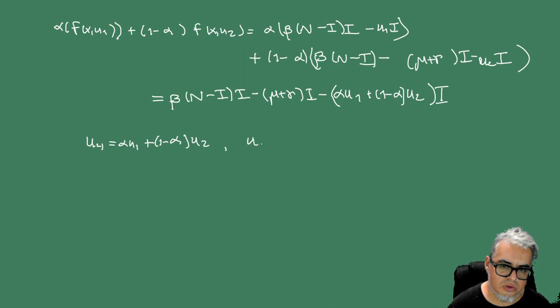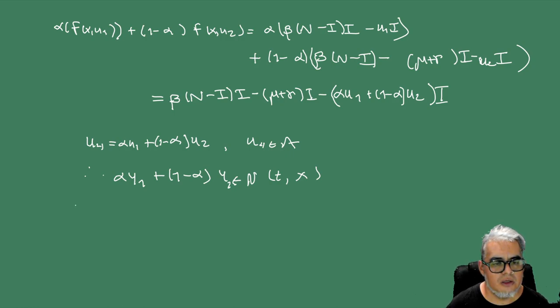Ahora vamos a hacer U4 igual a alfa U1 más 1 menos alfa U2. Y vemos que U4 está en A. Por lo tanto, alfa Y1 más 1 menos alfa Y2 pertenece a N de t, x.